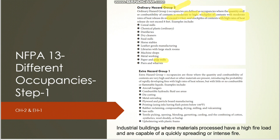We also need to consider the height at which materials are stored. Extra Hazard Group 1 is an industrial building where materials processed have a high fire load and are capable of quickly spreading fire. The quantity of combustibles is very high — much higher than ordinary hazard — and it produces a rapidly developing fire with a high rate of heat release. Examples include die casting and rubber reclaiming operations.